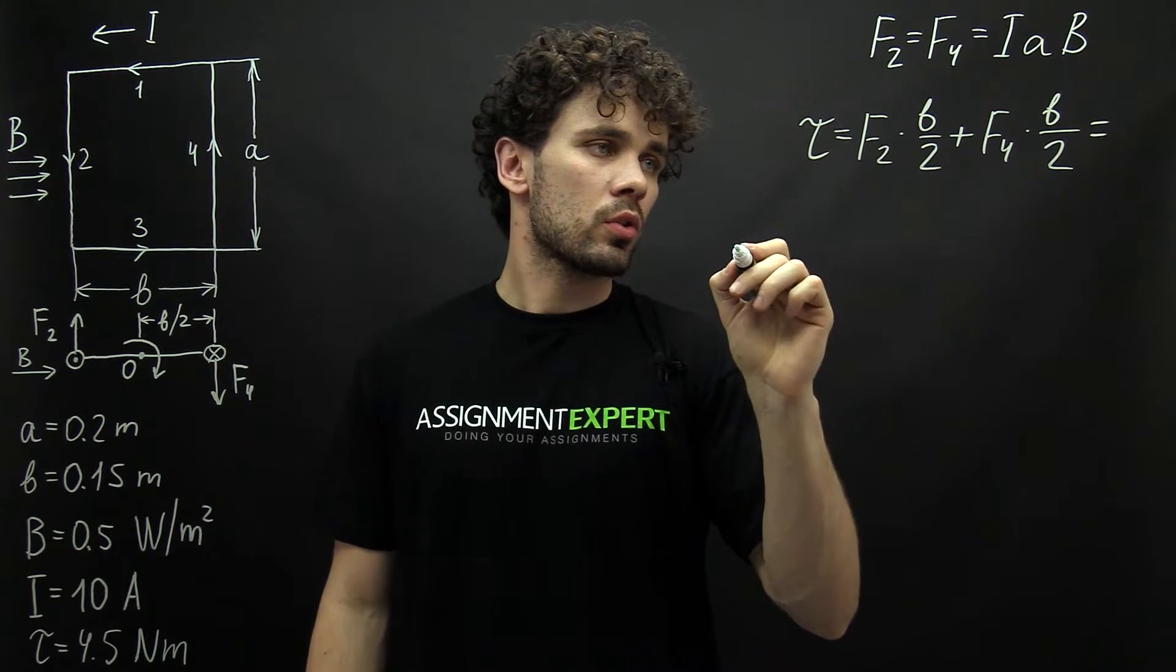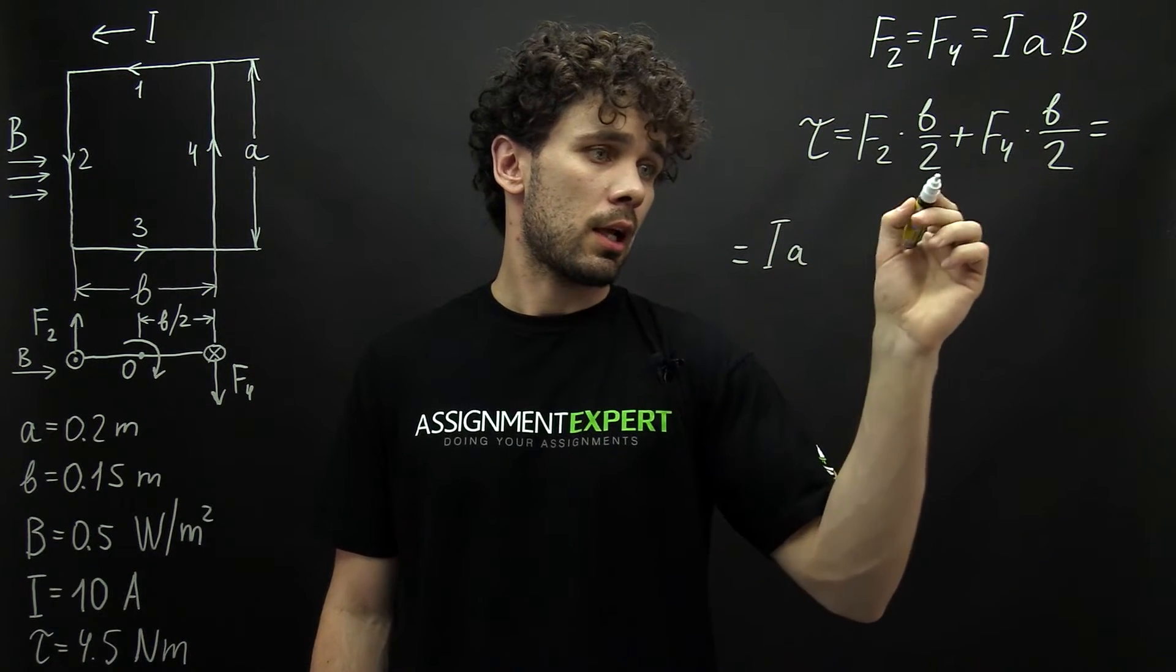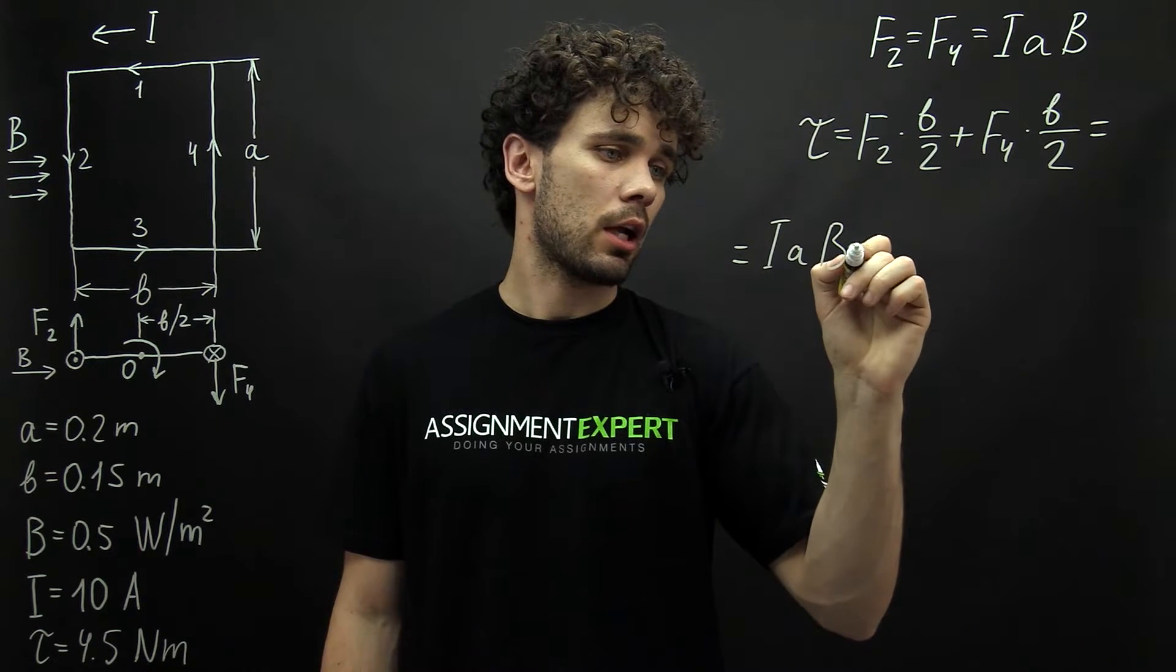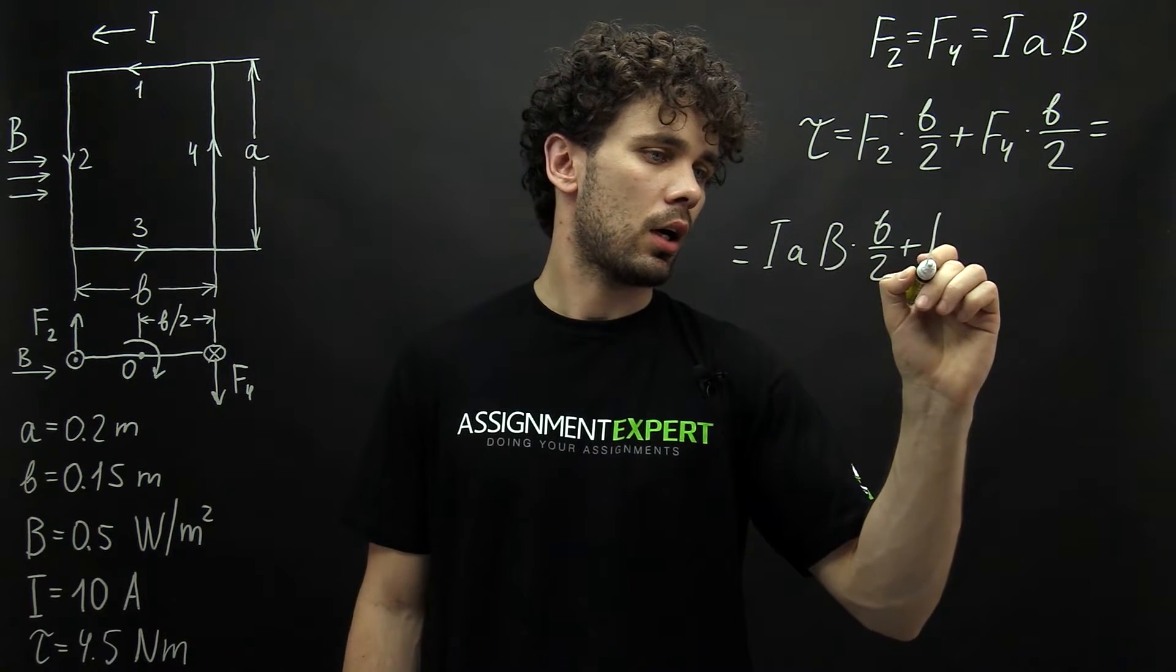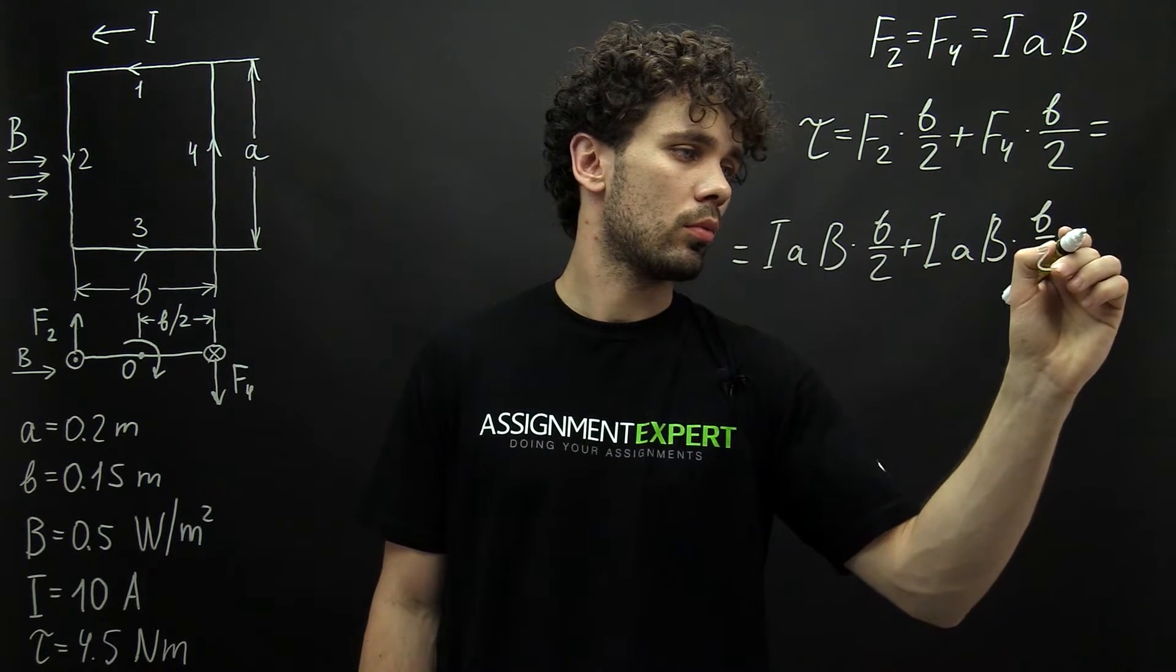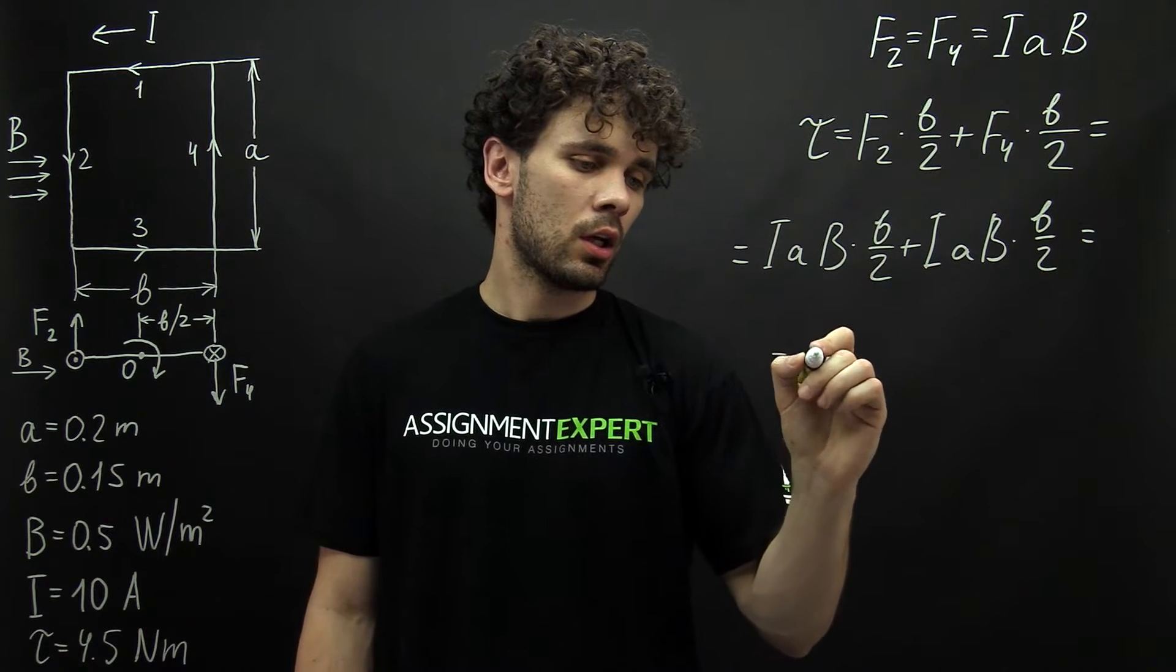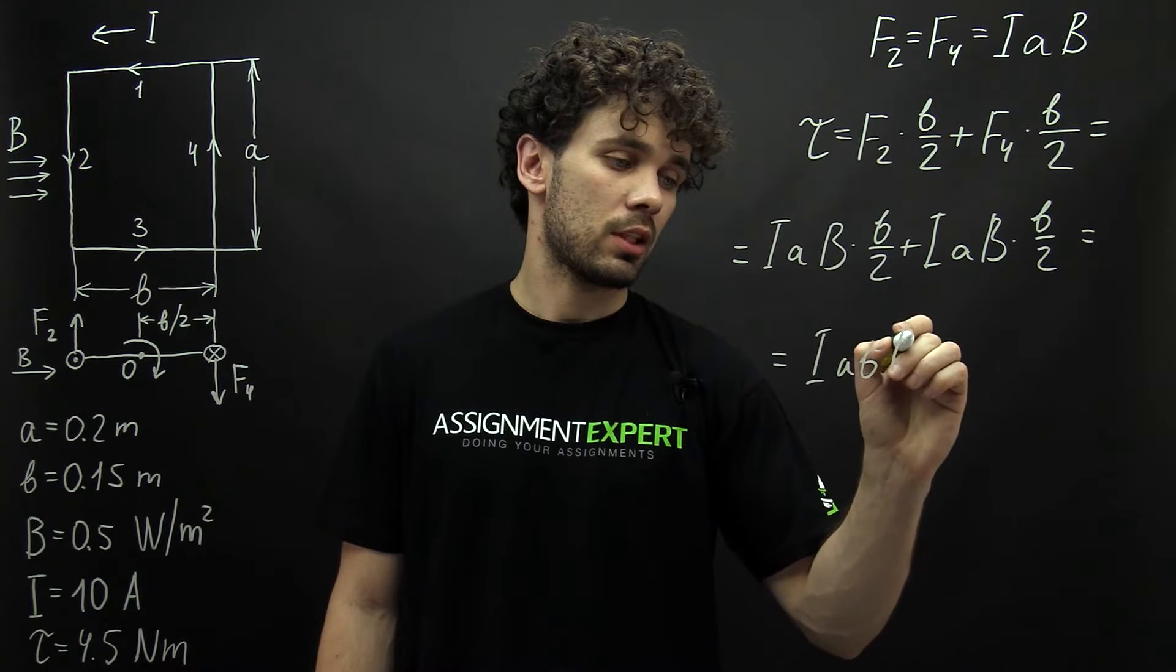So, TAU equals the following: I times A times B times B over 2 plus I times A times B times B over 2. And this gives us I times A times B times B.